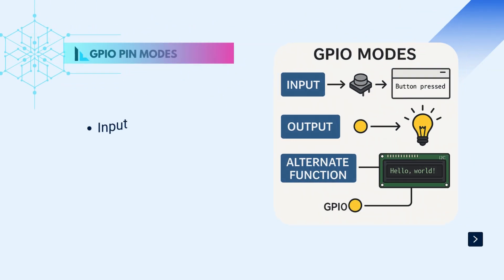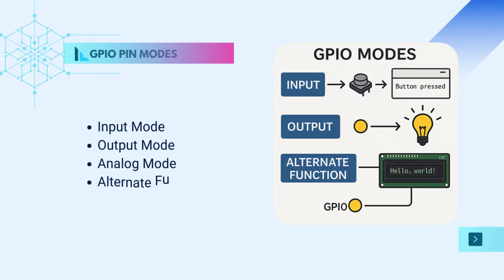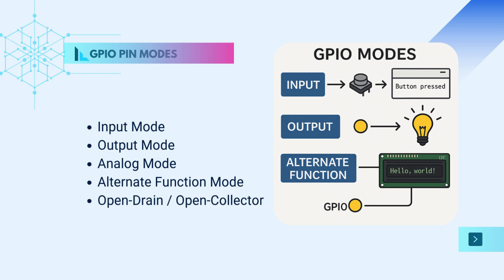Each GPIO pin can be configured into various modes, depending on what you want it to do. The most common ones are: Input mode — reads voltage to detect a button press or sensor value; Output mode — sends voltage to power an LED or control a motor; Analog mode — reads analog signals via ADC; Alternate function mode — used for communication like UART, SPI, I2C; and Open drain/open collector — ideal for multi-device communication lines.